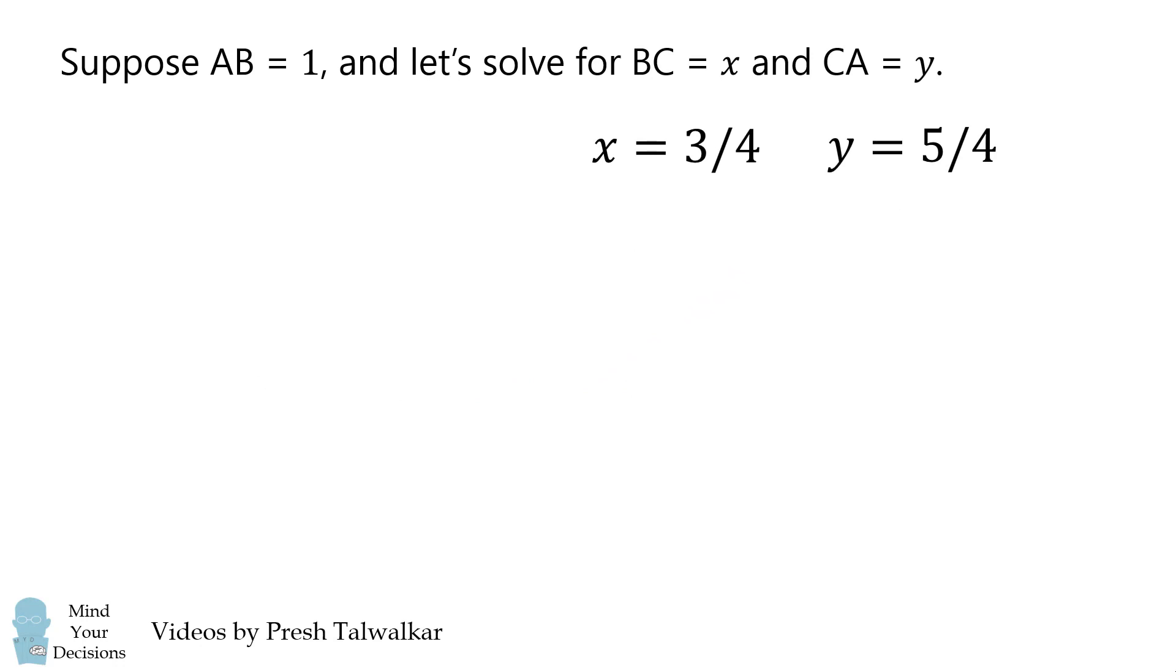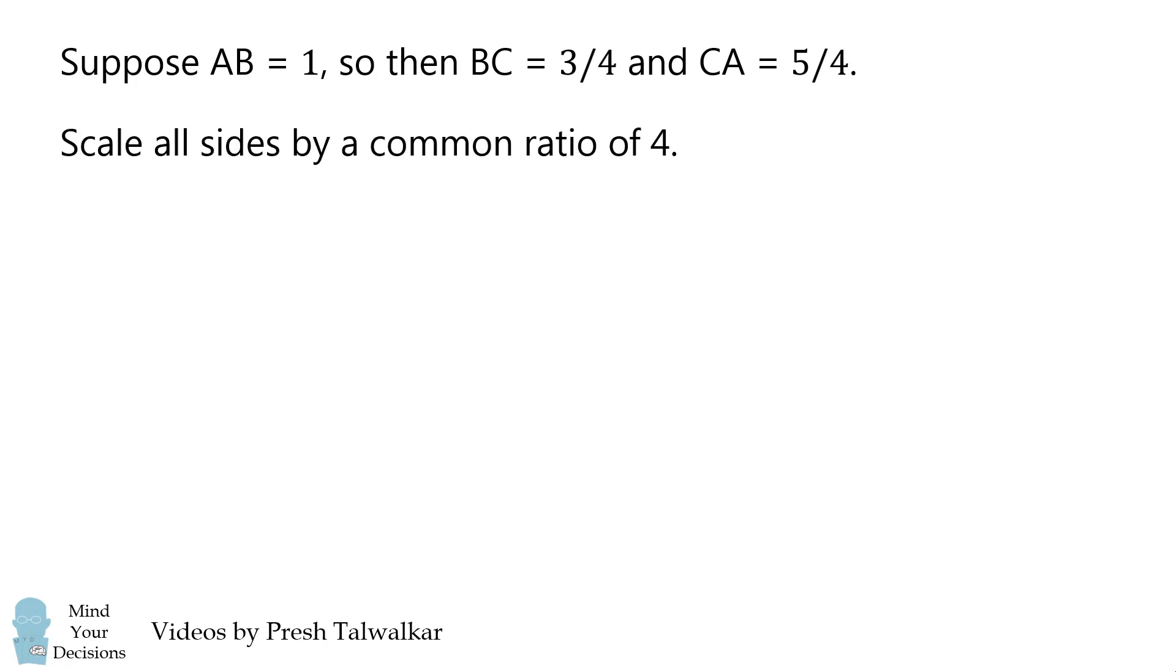So we've solved for the relative sizes if AB is equal to 1. But I still don't know the angle ABC. Let's scale all sides by a common ratio of 4. So AB will be equal to 4, BC will be equal to 3, and CA is equal to 5.